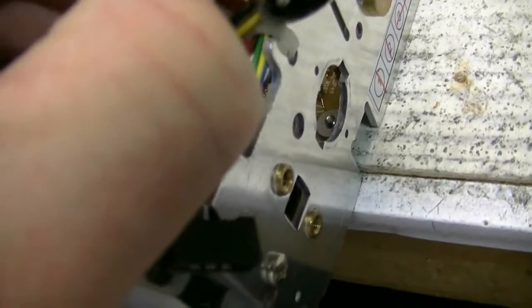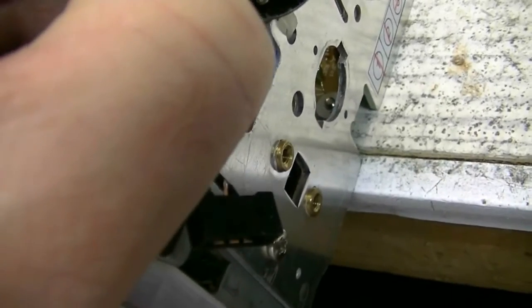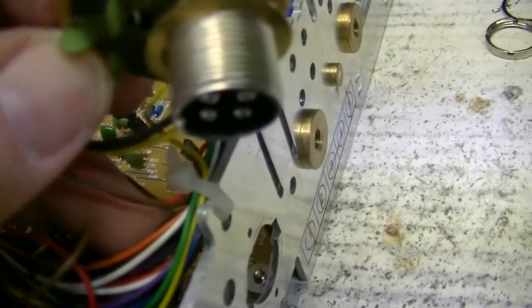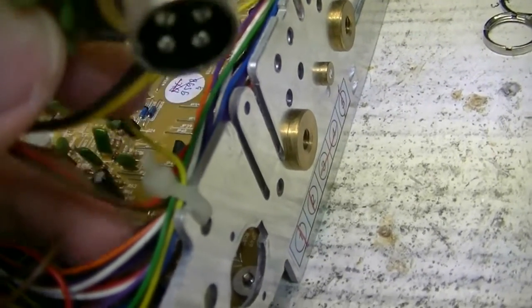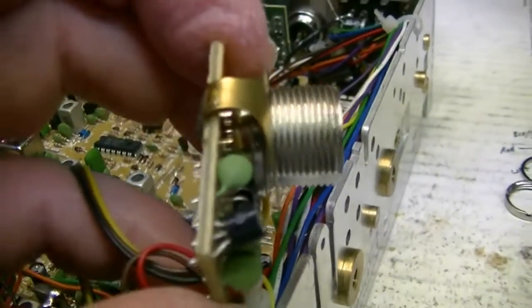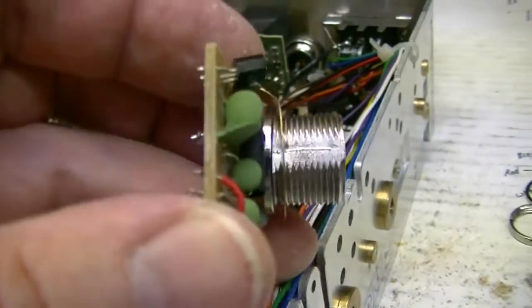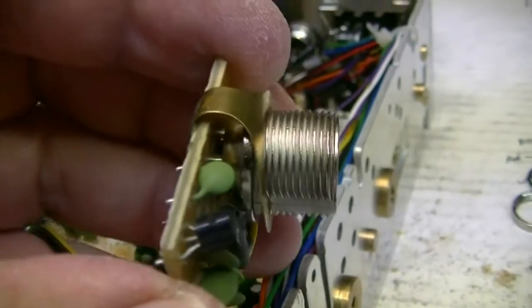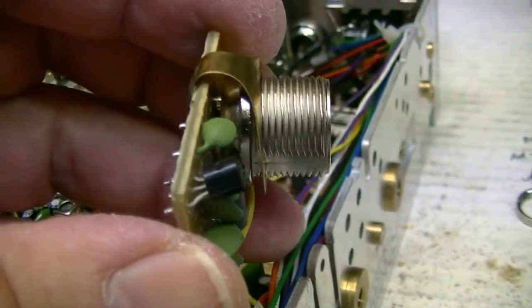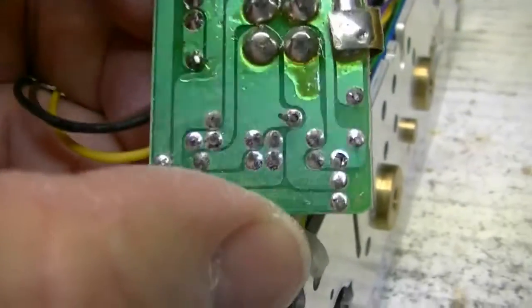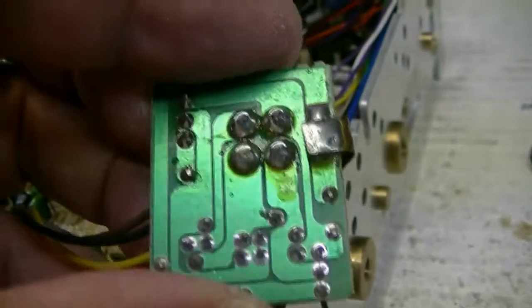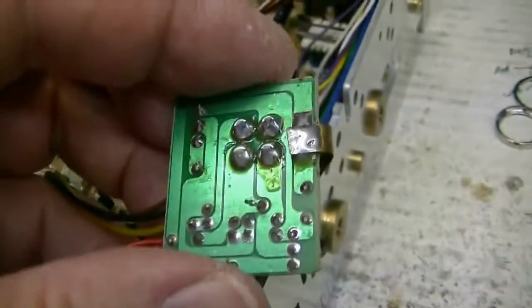And it's because this part here was raised up high enough to interfere with the mounting of this guy, and so he's actually mounted on the board crooked. So I'm going to straighten that out and re-solder him, cut off the excess lead, and see what I got. Be right back.